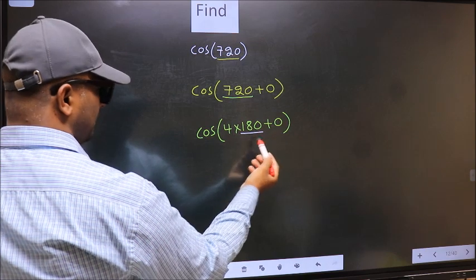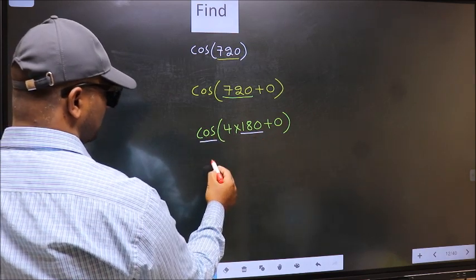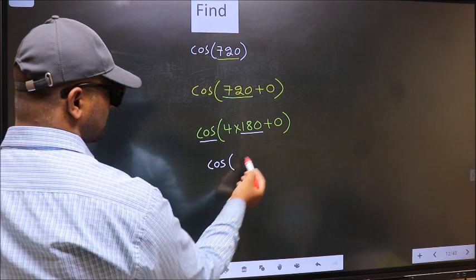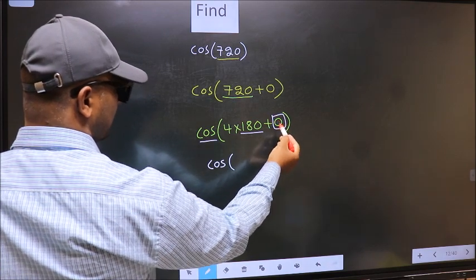Next, here we have 180. So cos is not going to change, it will remain cos. And inside, we get this angle 0.